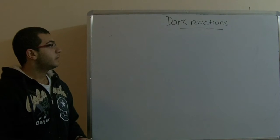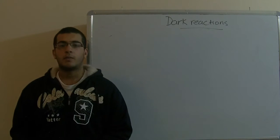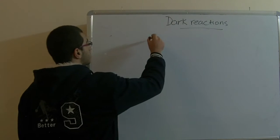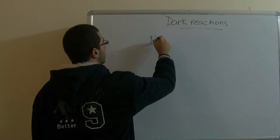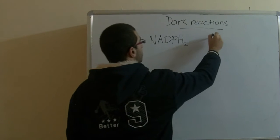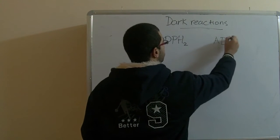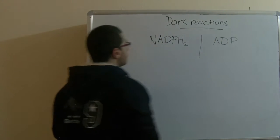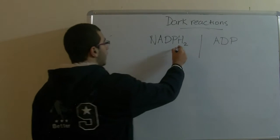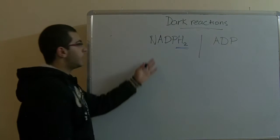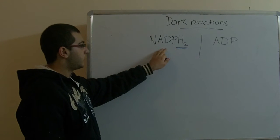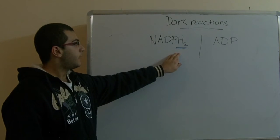At the end of last time, we mentioned that the light reactions end with two substances which are NADPH2 and ADP. The hydrogen molecule here is carried by this hydrogen carrier, nicotinamide adenine dinucleotide phosphate, and it carries the hydrogen.